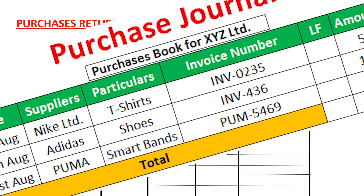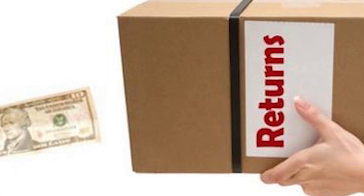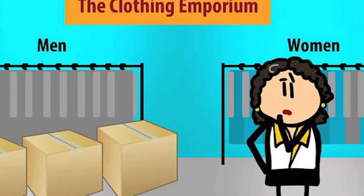Just like customers come to our shop and we give them goods on credit but later they return them — maybe because the goods are expired — it's the same in our own business. We go to our suppliers, buy goods on credit, but after some time we decide to return those goods. When we return goods we had bought for reselling, we call these purchase returns or returns outwards.